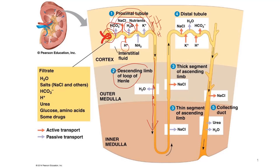Next, we focus on what happens in the ascending limb. The filtrate reaches the tip of the loop and then returns toward the cortex in the ascending limb. Unlike the descending limb, the ascending limb has a transport epithelium that lacks water channels. Consequently, the epithelium membrane of the ascending limb is not permeable to water. The ascending limb has two specialized regions: the thin segment and the thick segment.